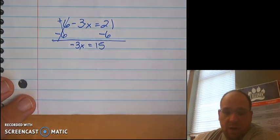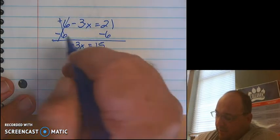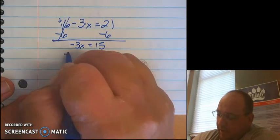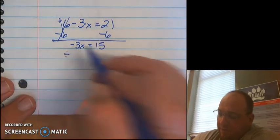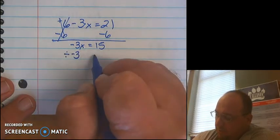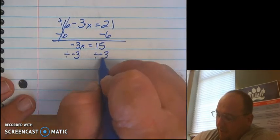Again, there's multiplication going on between this negative 3 and this x. So to undo multiplication, I do the inverse property, which is dividing. I am going to divide by this coefficient of negative 3 to both sides, again to keep that balance going.